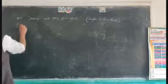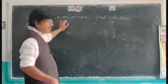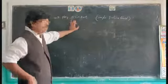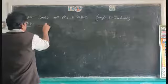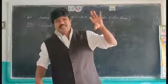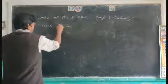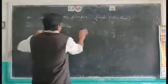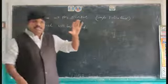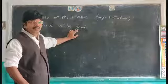For the passive voice, the object 'cricket' changes to subject. In future tense, we use the 'be' form: 'will be.' So it becomes 'Cricket will be played.' In passive voice, we always use the V3 form.